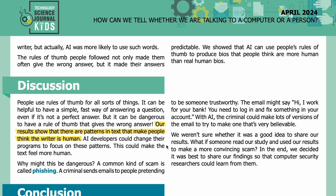AI developers could change their programs to focus on these patterns, which could make the text feel more human. Why might this be dangerous? A common kind of scam is called phishing — a criminal sends emails to people pretending to be someone trustworthy. The email might say, 'Hi, I work for your bank, you need to log in and fix something in your account.' With AI, the criminal could make many versions of the email to find one that's very believable. We weren't sure whether it was a good idea to share our results — what if someone used them to make a more convincing scam? In the end, we decided it was best to share our findings so that computer security researchers could learn from them.